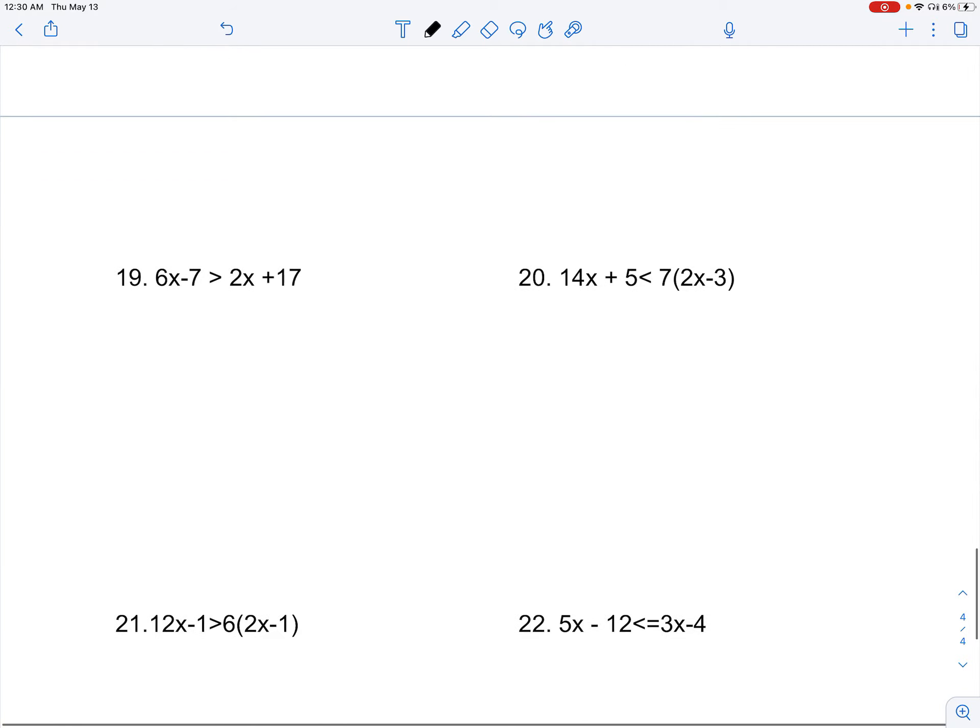Moving on. 6x minus 7 is greater than 2x plus 17. Now, we're trying to find out which range, which of the domains of x will make this true. So, we subtract 2x on both sides. We add 7 on both sides. We get 4x is greater than 24.